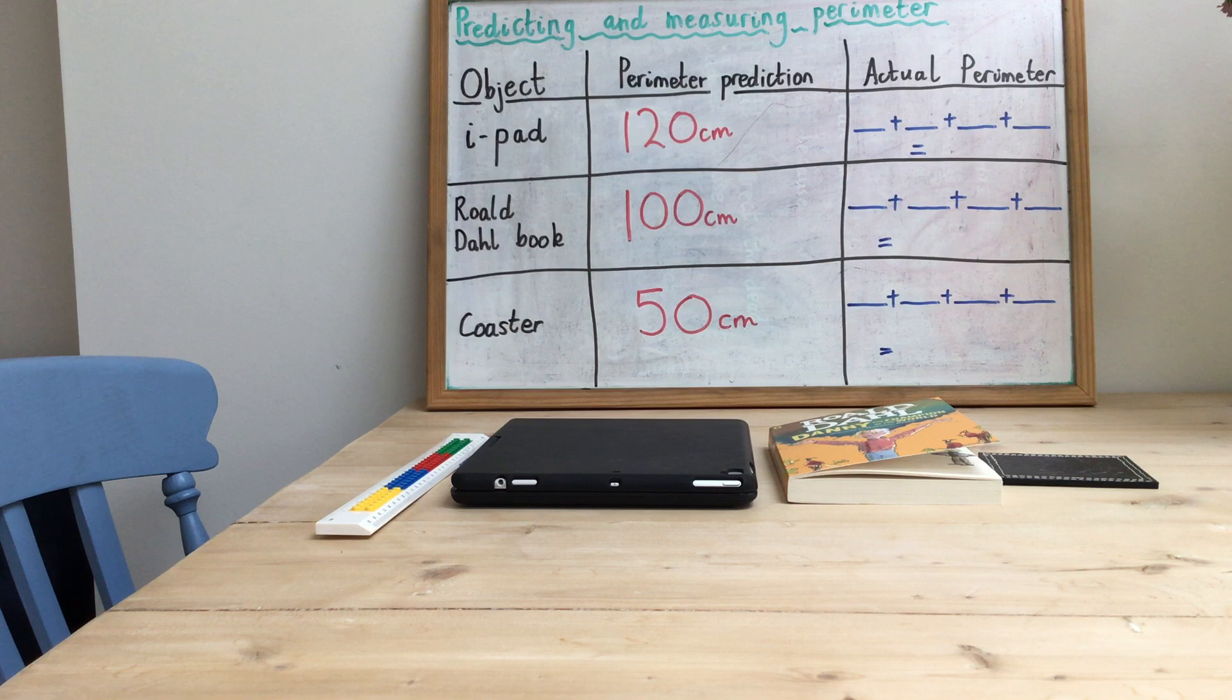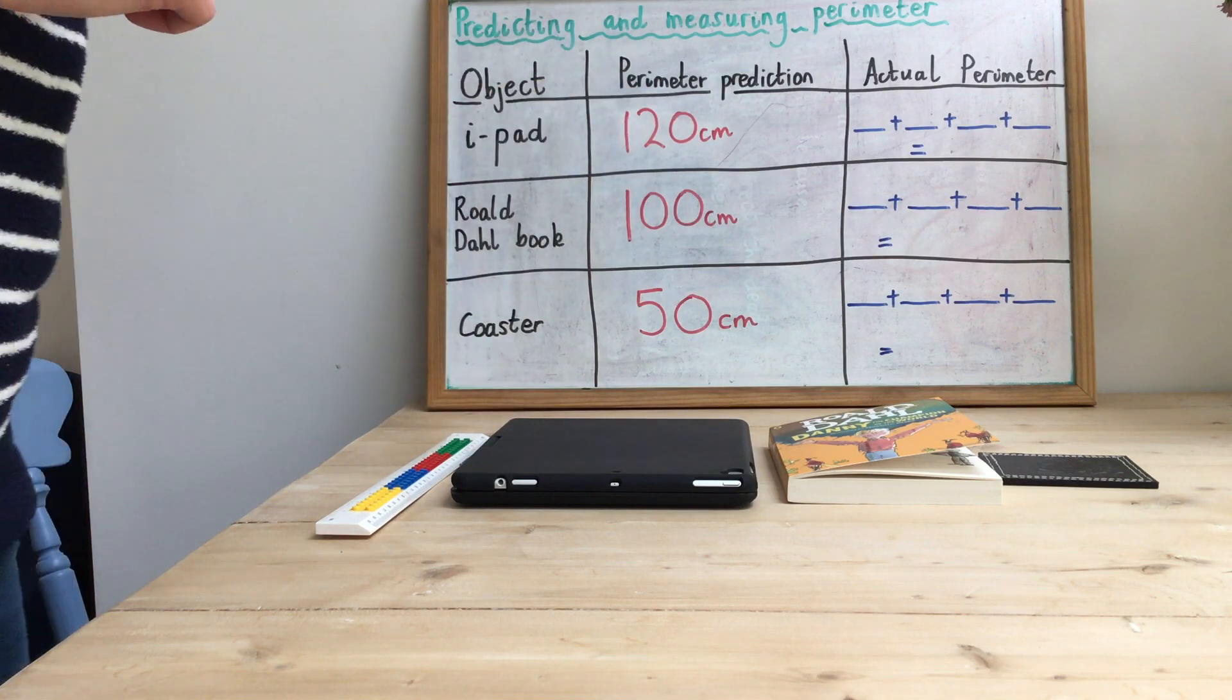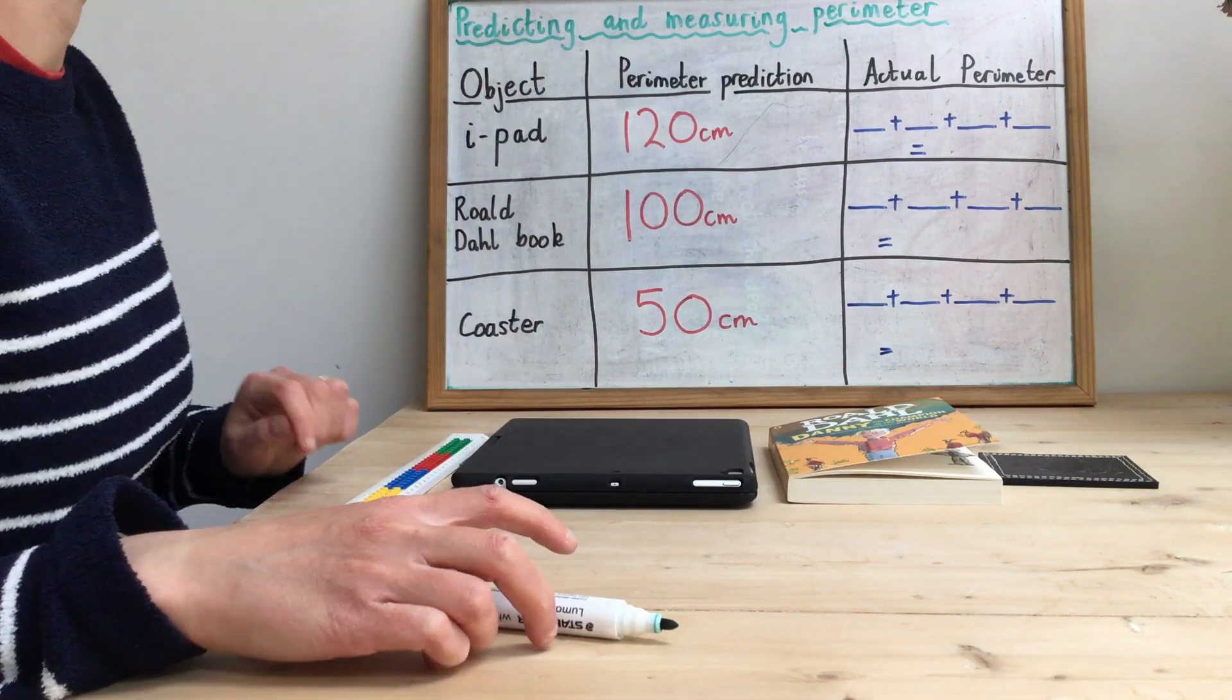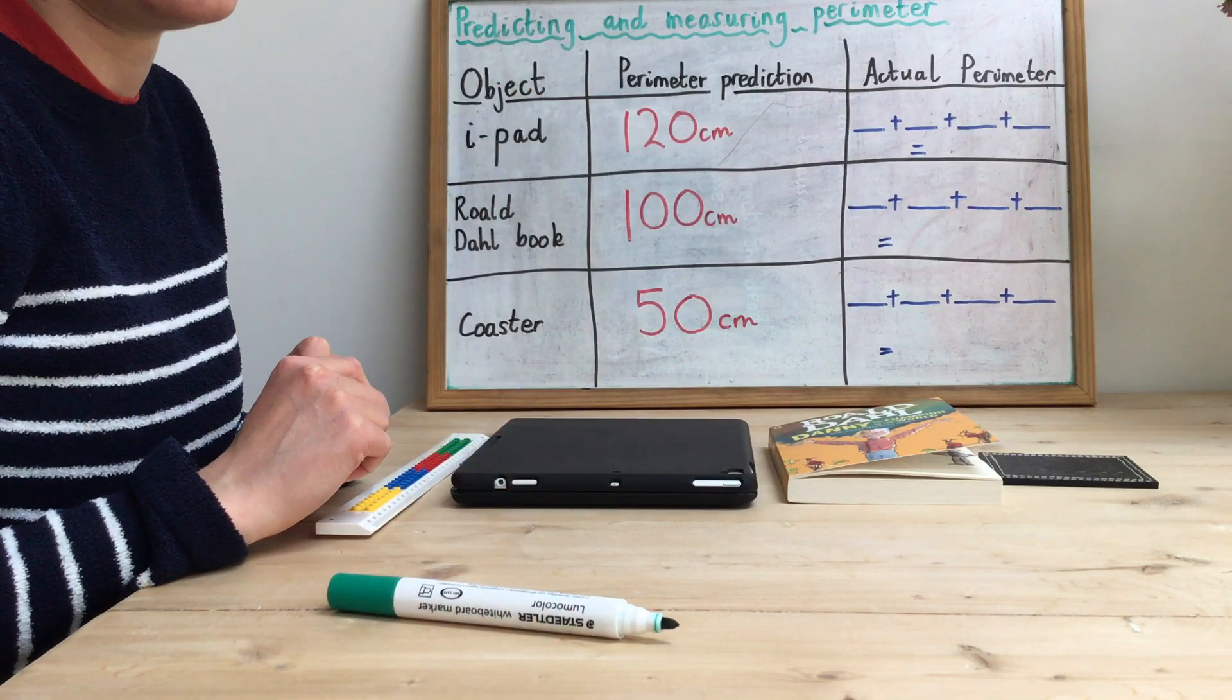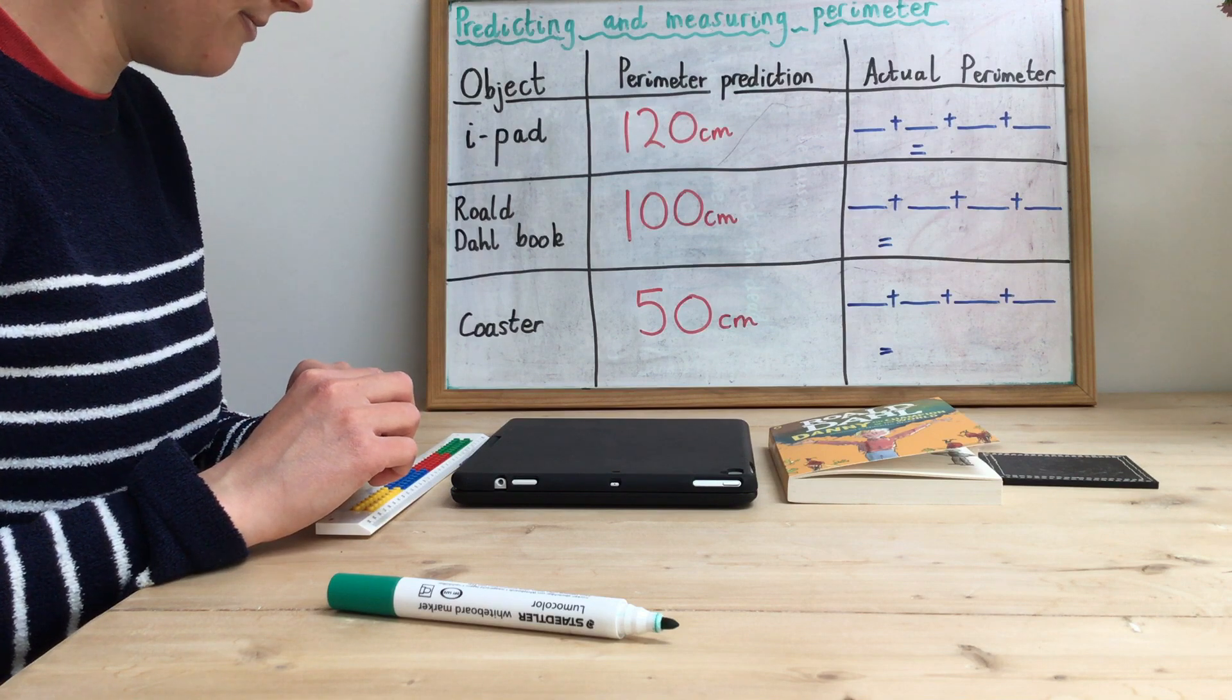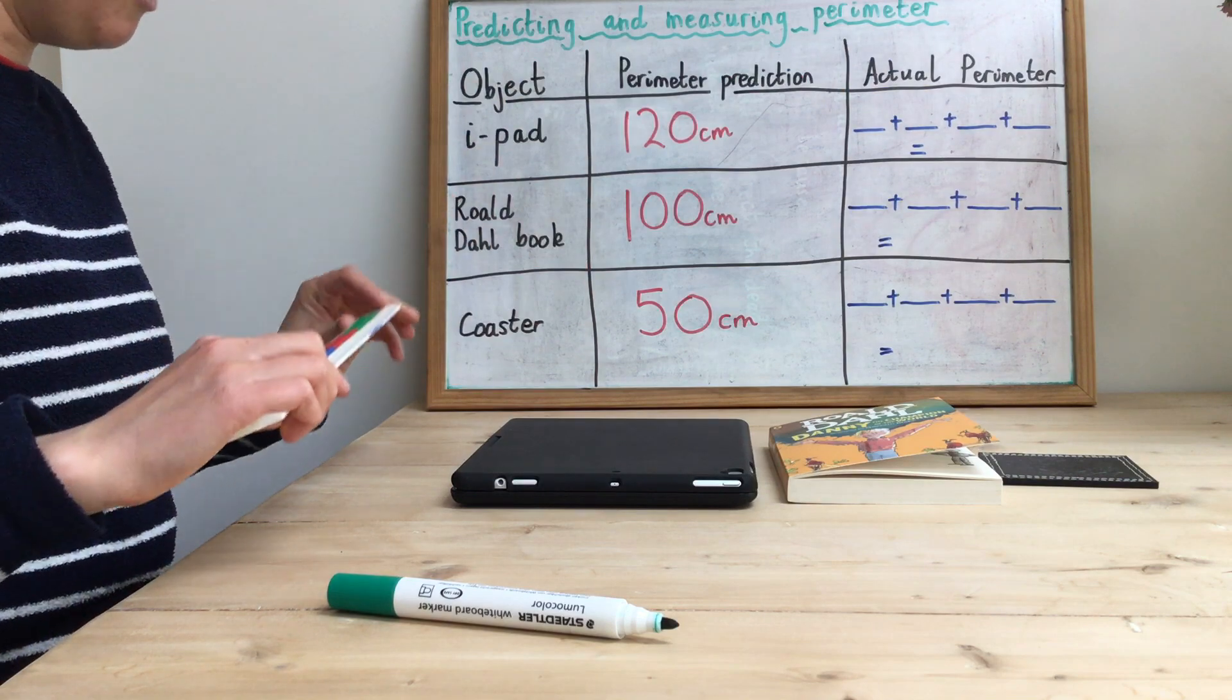So if we look first of all at my iPad, I've already had a prediction, a guess as to what I think the perimeter is going to be. So I predicted I think it's going to be 120 centimeters all the way around the edge of my iPad, but now I'm actually going to measure and I'm going to use my ruler to help me.